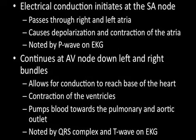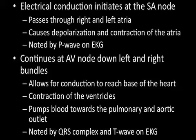Electrical conduction is initiated at the SA node and passes through the right and left atria, causing depolarization and contraction of the atria, noted by the P-wave on the EKG. Conduction continues at the AV node down the left and right bundles, reaching the base of the heart and allowing contraction of the ventricles, pumping blood toward the pulmonary and aortic outlets. This is noted by the QRS complex and the T-wave on the EKG.